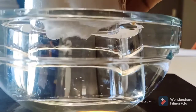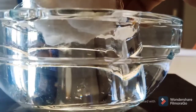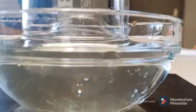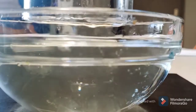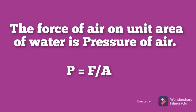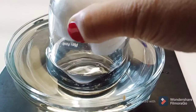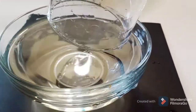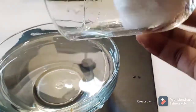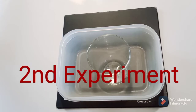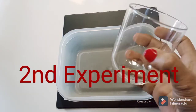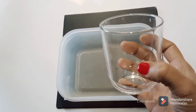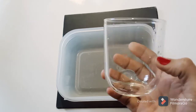You can see the pressure applied by the air is released in the form of an air bubble. The force of air on unit surface area of water is the pressure of air. If you release the air pressure, then the water level goes down. Now one more experiment we are going to do to observe air pressure.